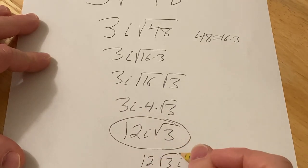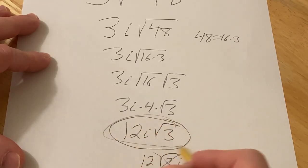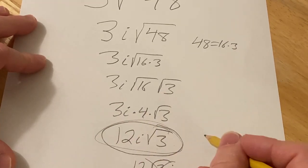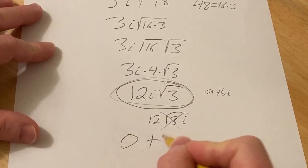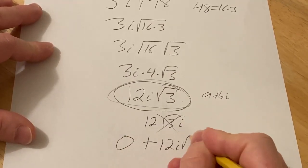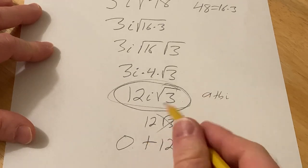But the problem with that is that it's sometimes confusing, right? Look, where's the square root end, right? So it's better to put it there whenever you have a root. Also you might say a plus bi, where's the a? It's really 0 plus 12i square root of 3. So the 0 is really there. It's the a.